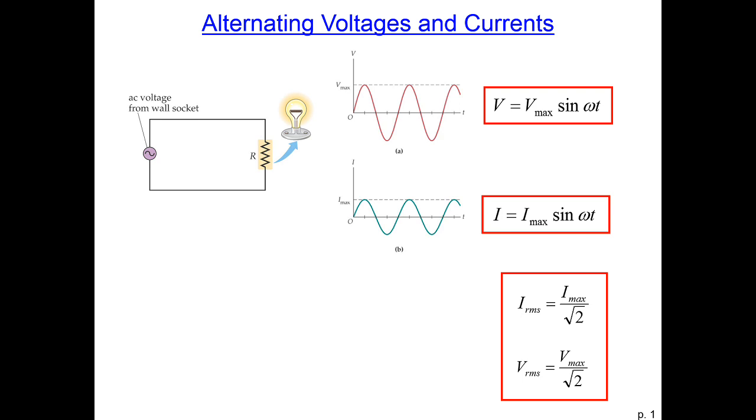For the current, it's the same. The current equals the maximum current times sine of omega times time. If you're visualizing this, in direct current, the current flows around like water through a pipe, but in alternating current, the current oscillates back and forth.